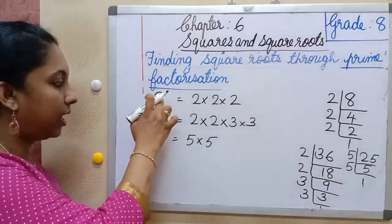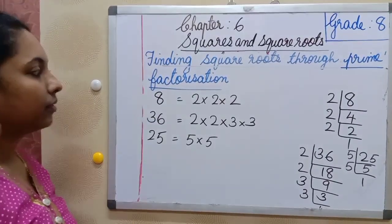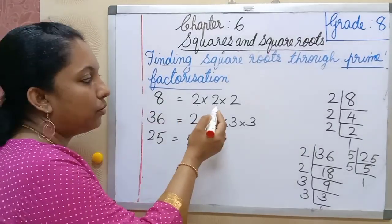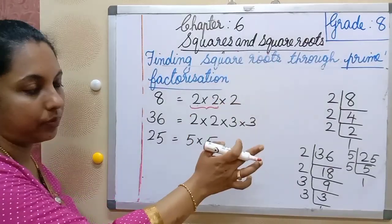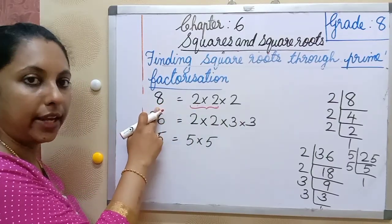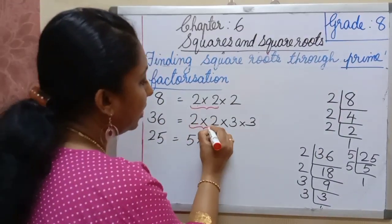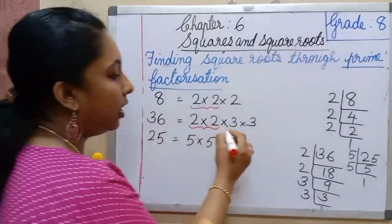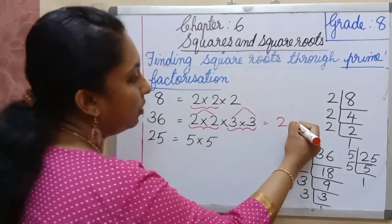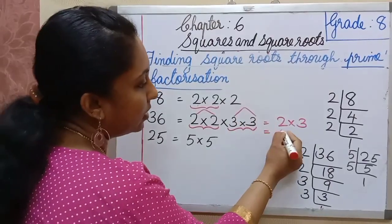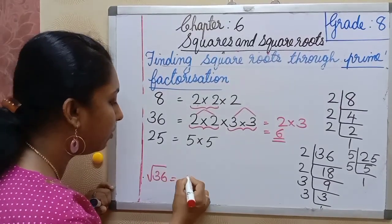Now let's find the square roots using these factors. For 8: factors are 2 × 2 × 2 — only one pair of 2s with one 2 left over, so 8 is not a perfect square and we cannot take the square root. For 36: factors are 2 × 2 × 3 × 3 — we get one pair of 2s and one pair of 3s, so we take one 2 and one 3, giving us 2 × 3 = 6. The square root of 36 is 6.